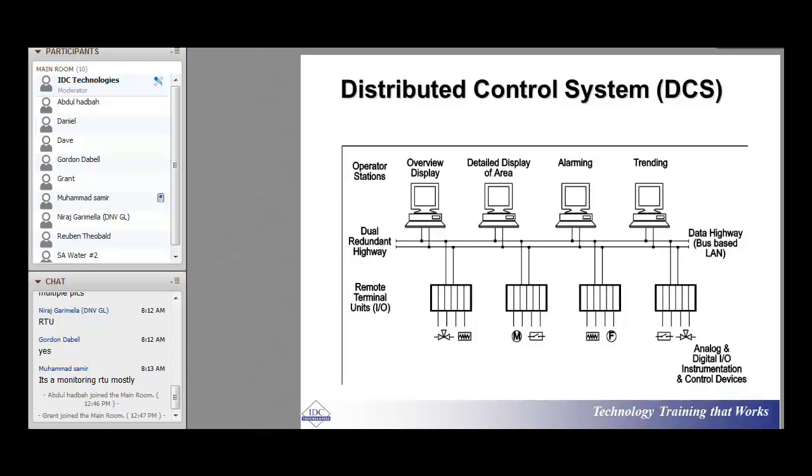Now, for a DCS, you can see that the distributed control system is an architecture of plant control or process control.